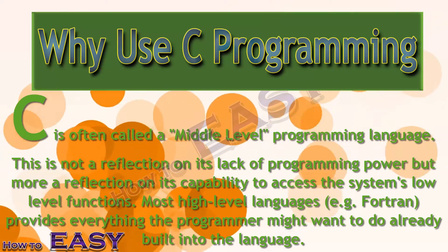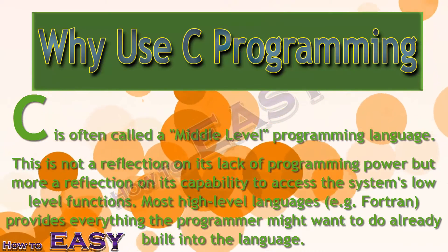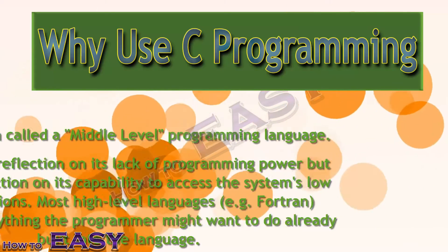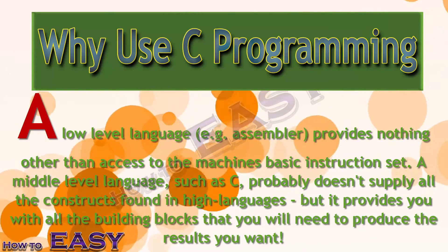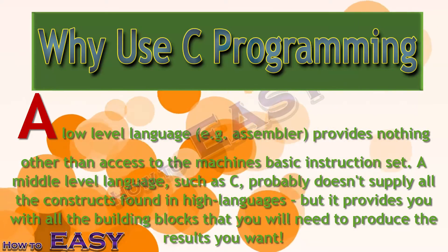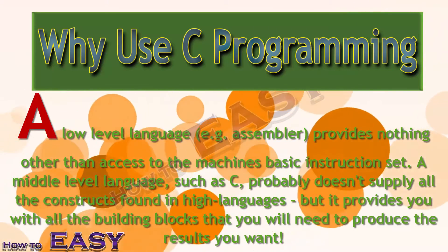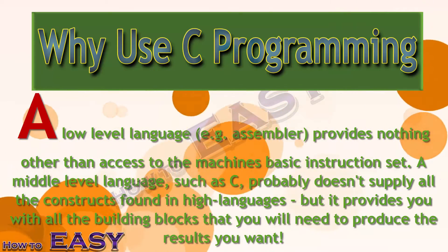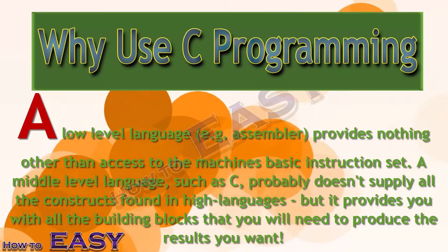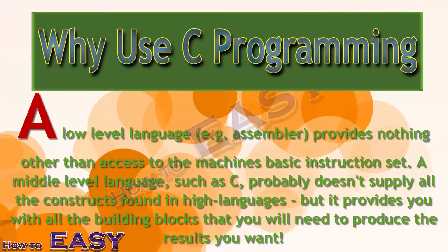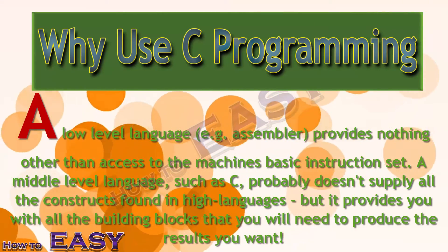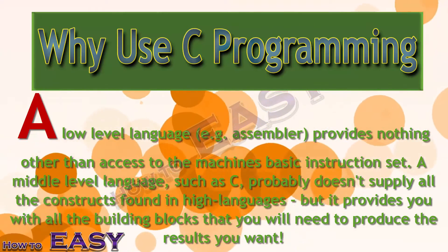Most high-level languages, for example Fortran, provide everything the programmer might want to do already built into the language. A low-level language, for example assembler, provides nothing other than access to the machine's basic instruction set. A middle-level language such as C probably doesn't supply all the constructs found in high-level languages, but it provides you with all the building blocks that you will need to produce the results you want. Overall, C is the best option for beginners and professionals.